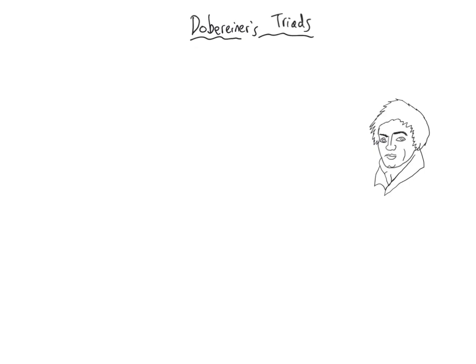We're going to look at three scientists whose work is particularly important in the development of the modern periodic table. The first is Johann Wolfgang Döbereiner, who came up with the idea of triads — grouping elements into threes where each element had similar chemical and physical properties. He used the relative atomic mass, or atomic weight as they called it. These two pieces of information — the properties and the atomic weights — were really the only different bits of information available at the time to judge the elements.